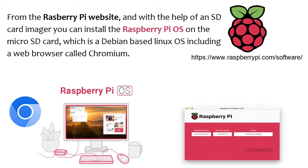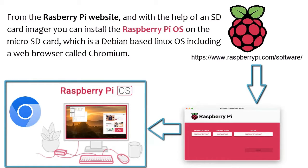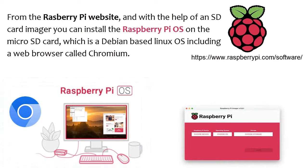From the Raspberry Pi website and with the help of an SD card imager you can install the Raspberry Pi OS on the microSD card, which is a Debian-based Linux OS including a web browser called Chromium.